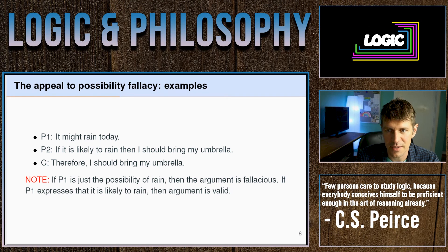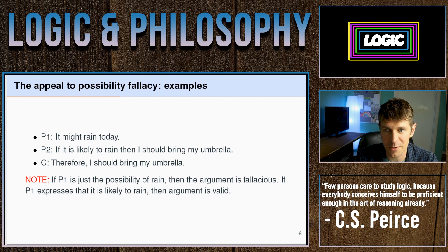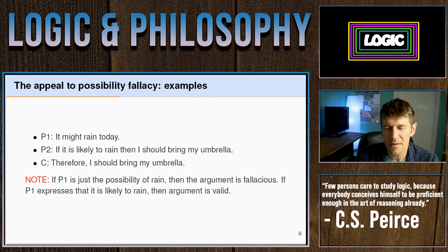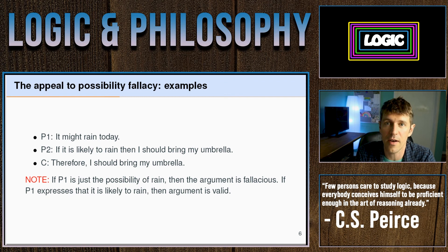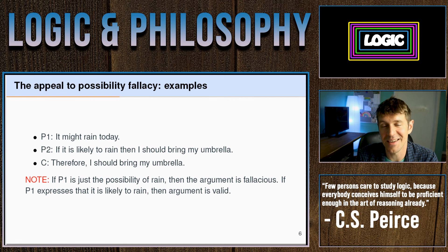Here's another example. Premise: it might rain today. If it's likely to rain, then I should bring my umbrella. Therefore, I should bring my umbrella. Here there's a shift from the possibility of rain to the unstated premise that if it's possible it will rain, then it's likely it will rain, and therefore you should bring an umbrella. Note that premise one can be read two ways: if it asserts mere possibility, the fallacy is committed; but if it asserts the probability of rain, the argument is not fallacious — you'd simply be reasoning from probability to needing an umbrella.